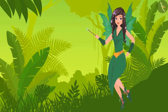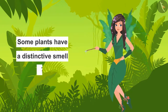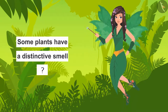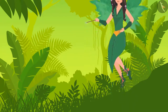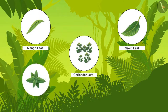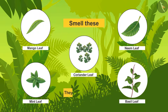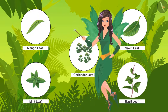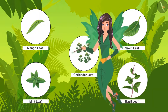Alright children, have you ever noticed that some plants have a distinctive smell? With the help of an elder, collect leaves of plants like mango, neem, coriander, mint and basil. Now smell these — don't they all smell different? Are some of these leaves used while cooking at your home? Do ask your parents.